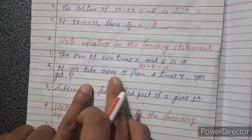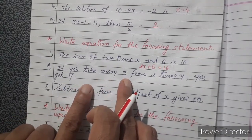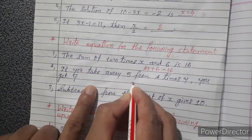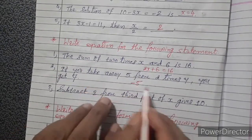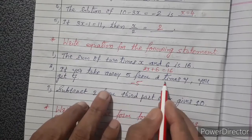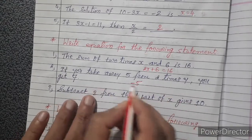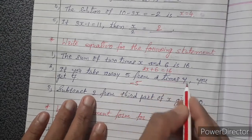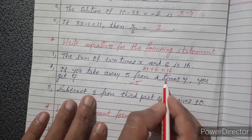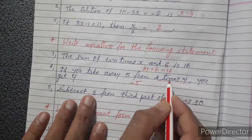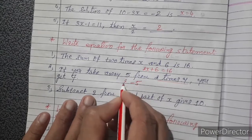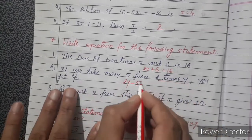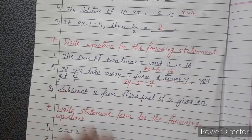If you take away 5 — take away means subtraction — from 2 times y, you get 7. So the equation is 2y minus 5 equals 7.